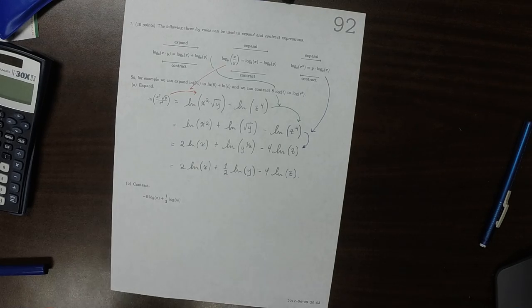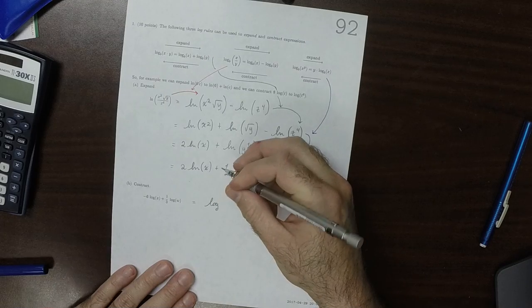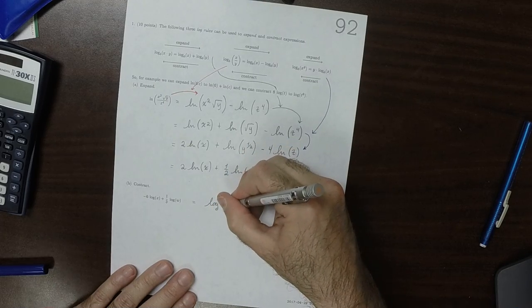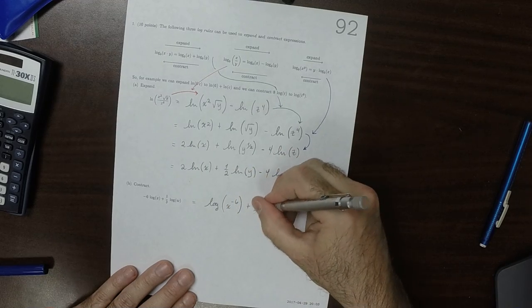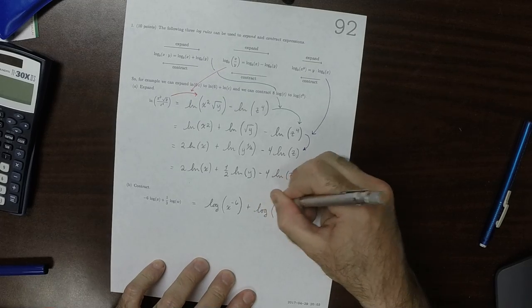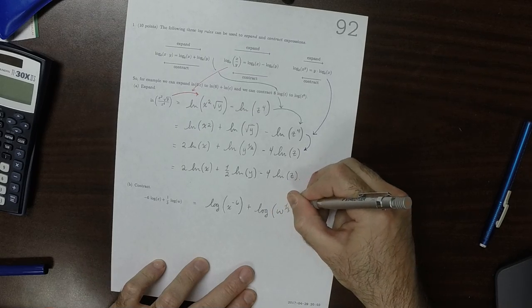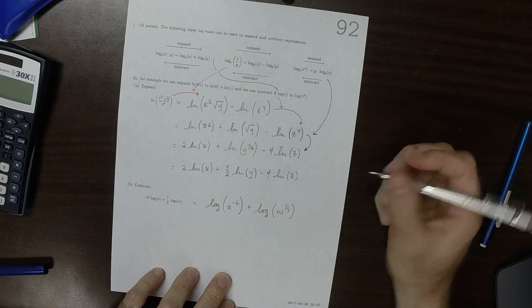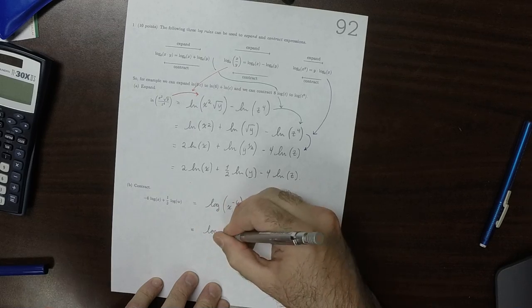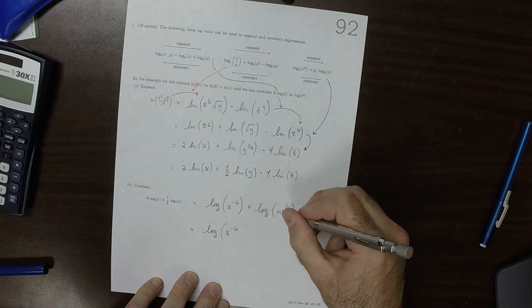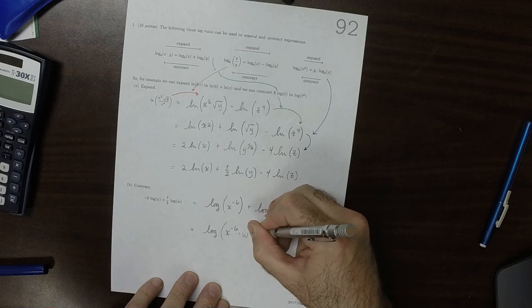Plus common log of x to negative 6, and then plus common log of w to 1 third. And then I can combine these into common log of x to negative 6 multiplied by w to 1 third.